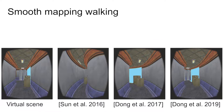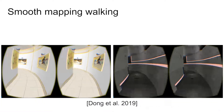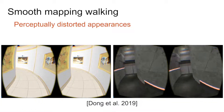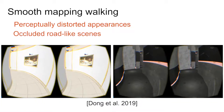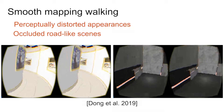Another line of research is to alternate the scene geometry so that users perceive and walk through a curved scene. However, the distortion is usually implausible and not applicable to open spaces.